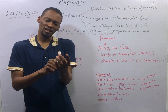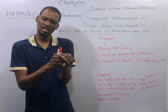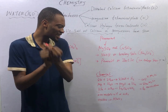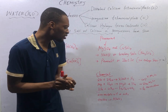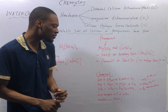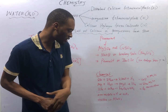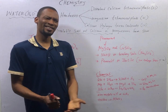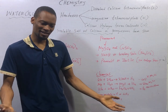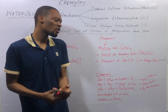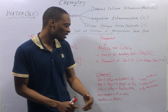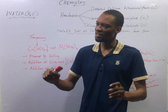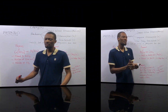Iron cannot react with cold water or ordinary steam — it can only react with excess steam, forming an oxide and giving off hydrogen. Water can also react with non-metals to give either hydrogen or acids, and water can react with oxides to give alkalis, which are soluble bases.